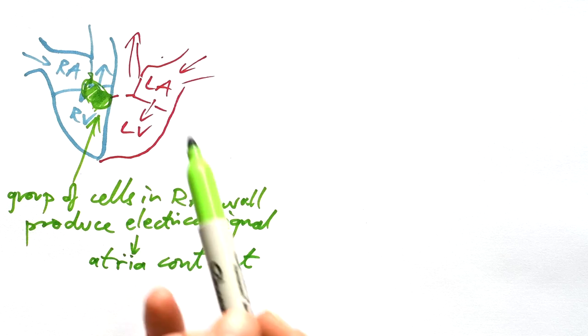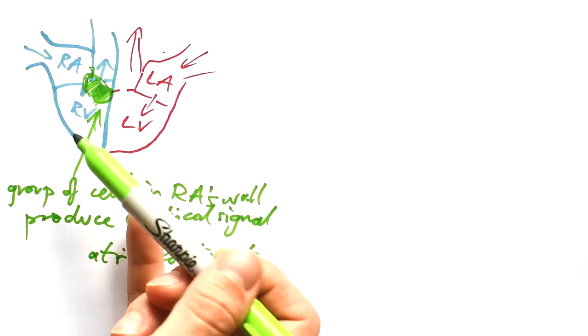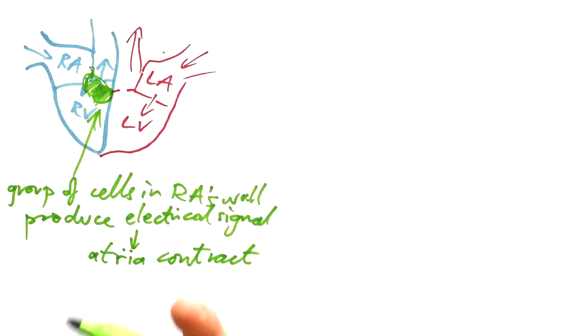So a group of cells in the right atrium's wall produce an electrical signal, and then that makes both atria contract. If both atria contract, that means blood goes from the right atrium into the right ventricle, and from the left atrium into the left ventricle.